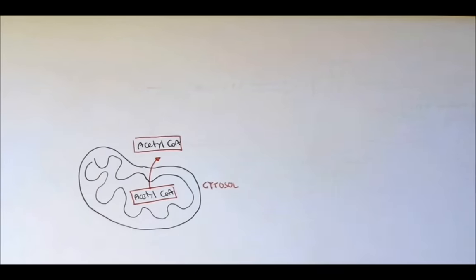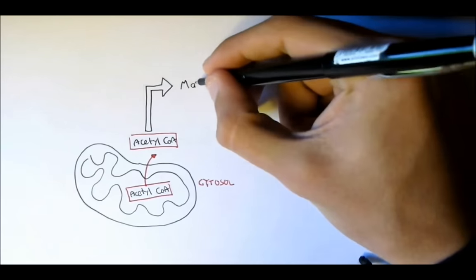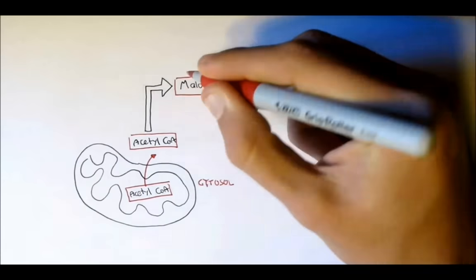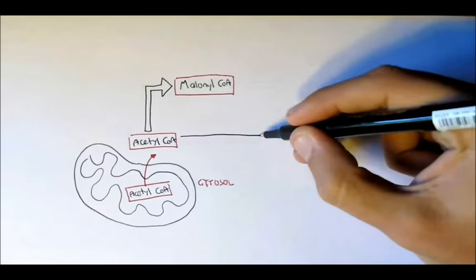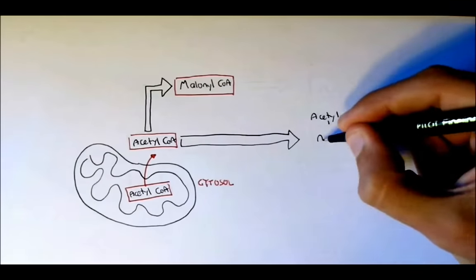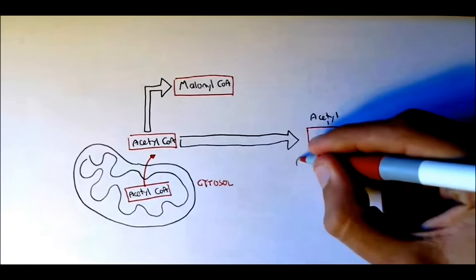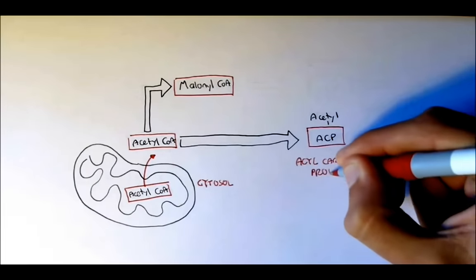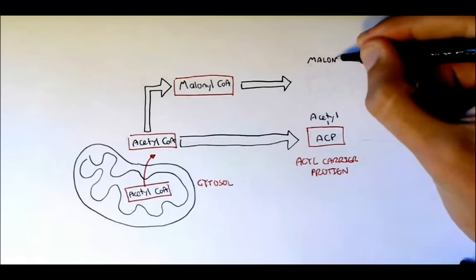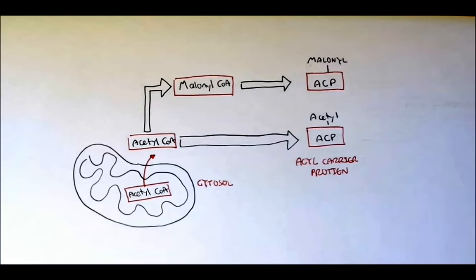This is a quick overview before looking at the actual metabolism map. Acetyl-CoA will essentially become malonyl-CoA, or it will become acetyl-ACP. ACP stands for acyl-carrier protein, and this protein helps in the synthesis of fatty acids. Malonyl-CoA also binds to an acyl-carrier protein, becoming malonyl-ACP.